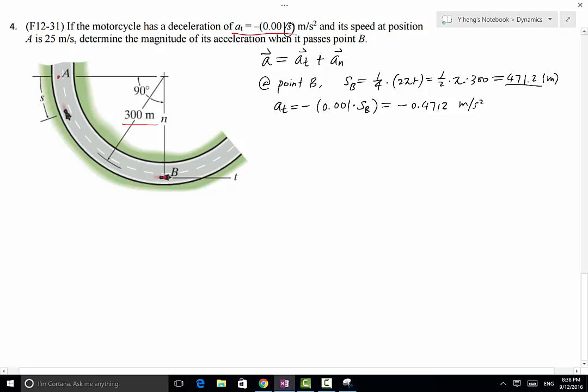So the next thing we need to know is a_n. And a_n, the magnitude equals to v squared over ρ. ρ is a constant 300 meters. This v right here has to be specific. It has to be v_B, the speed at point B. And we are only given the speed at point A. v_A equals to 25 meters per second.